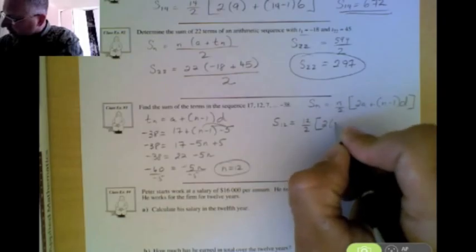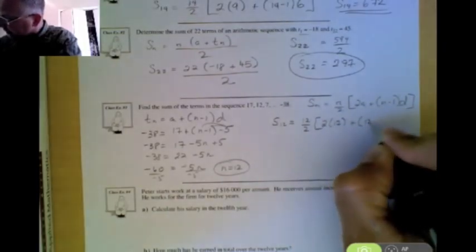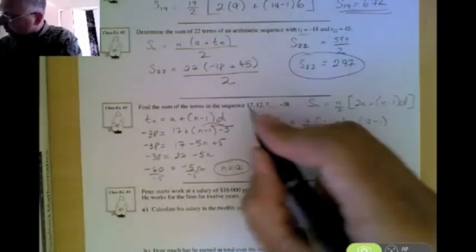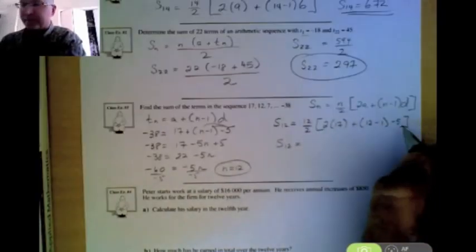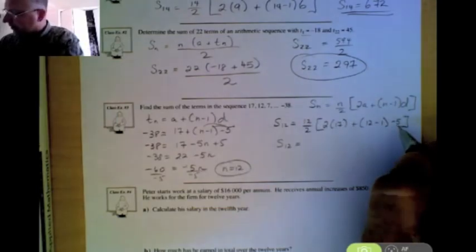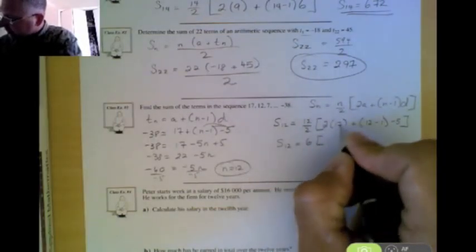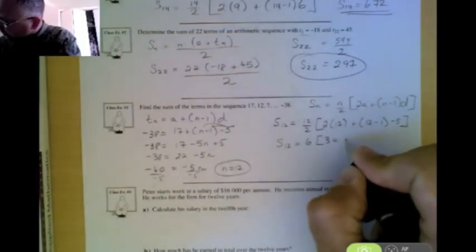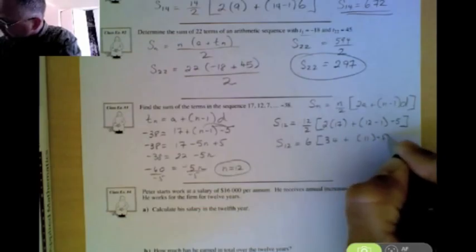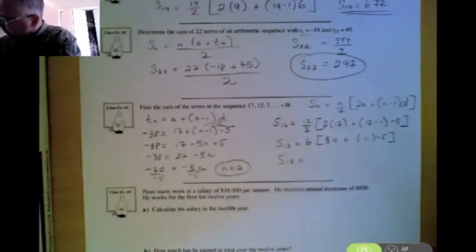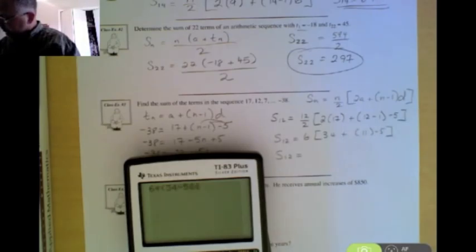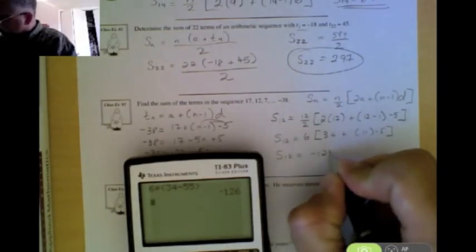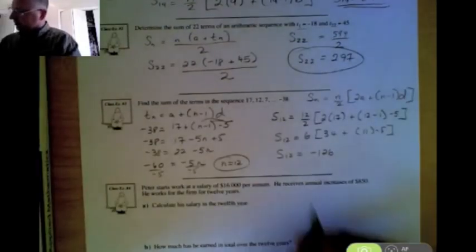So we start substituting in our values for our a, our n, and our d. Don't forget that the common difference here is negative 5. That's going to make a huge difference when you find your sum. If you put a positive 5 in here, you're going to get a really wacko answer. So 12 divided by 2 is 6. 17 times 2 is 34, plus 11 times negative 5. So if I work this out on my calculator, I'm going to go 6 times 34 minus 55. I'm going to get a negative 126 as the sum of these values.